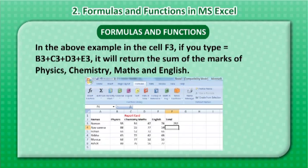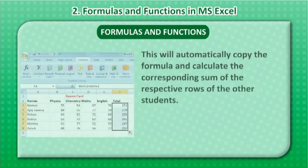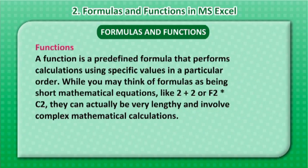For example, in cell F3, if you type =B3+C3+D3+E3, it will return the sum of the marks of Physics, Chemistry, Maths, and English. Copying a Formula: If you want an already created formula to be copied and applied in the remaining cells, you can select the small rectangular dot at the bottom of the cell and drag to the remaining cells. This will automatically copy the formula and calculate the corresponding sum for the respective rows of other students.